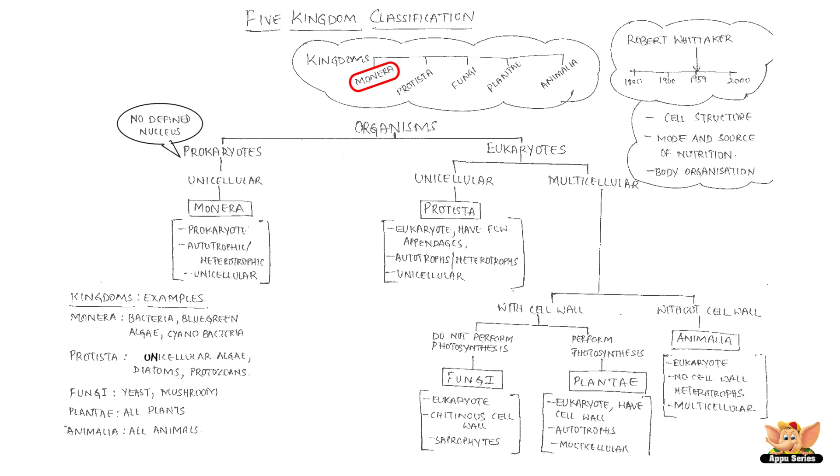The five kingdoms are: Monera, Protista, Fungi, Plantae, and Animalia.